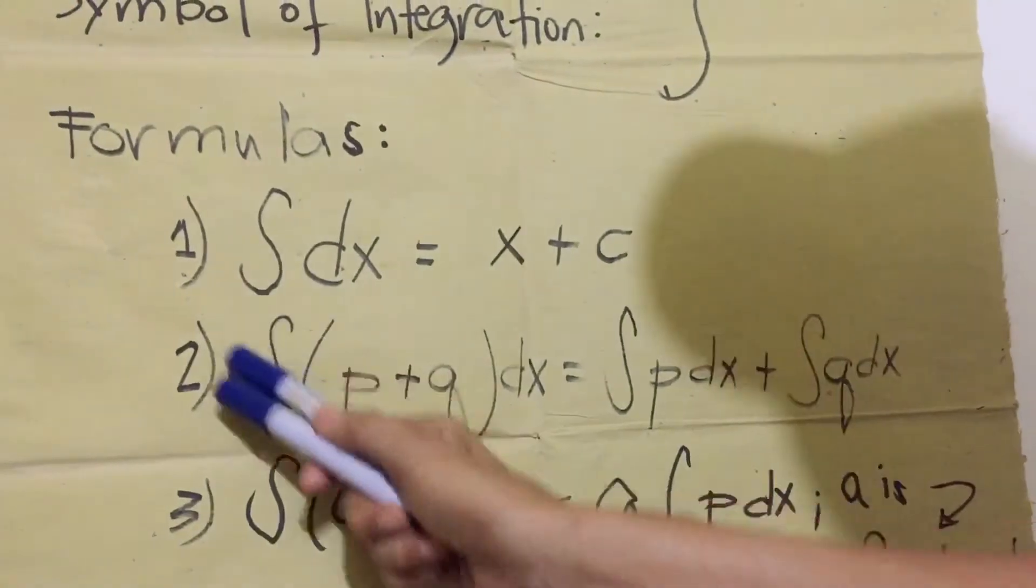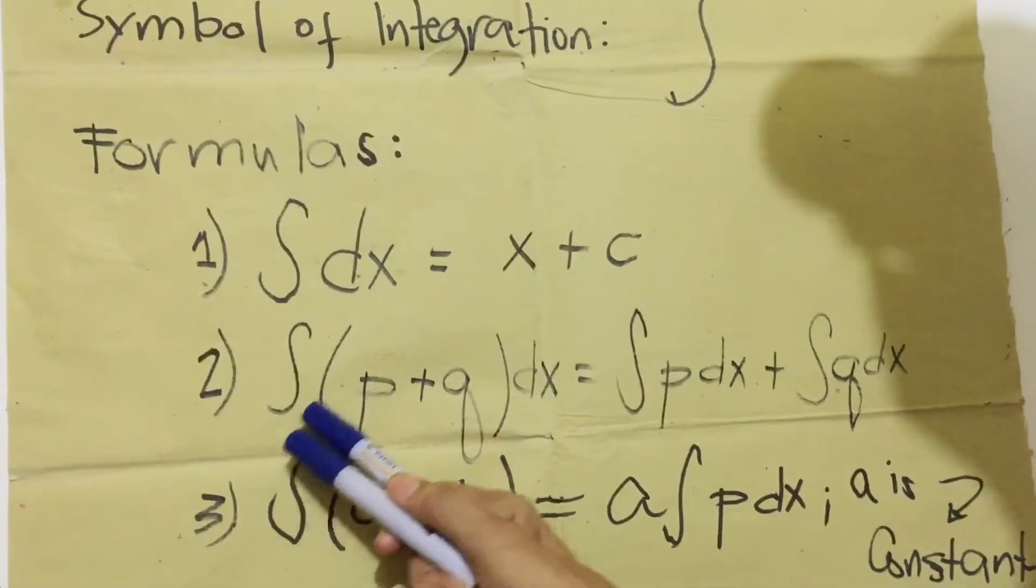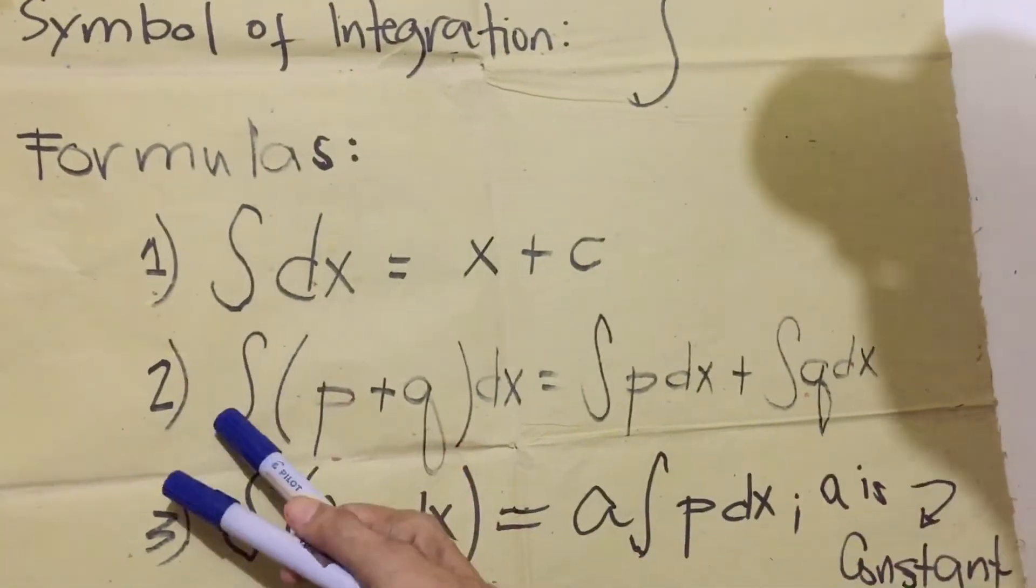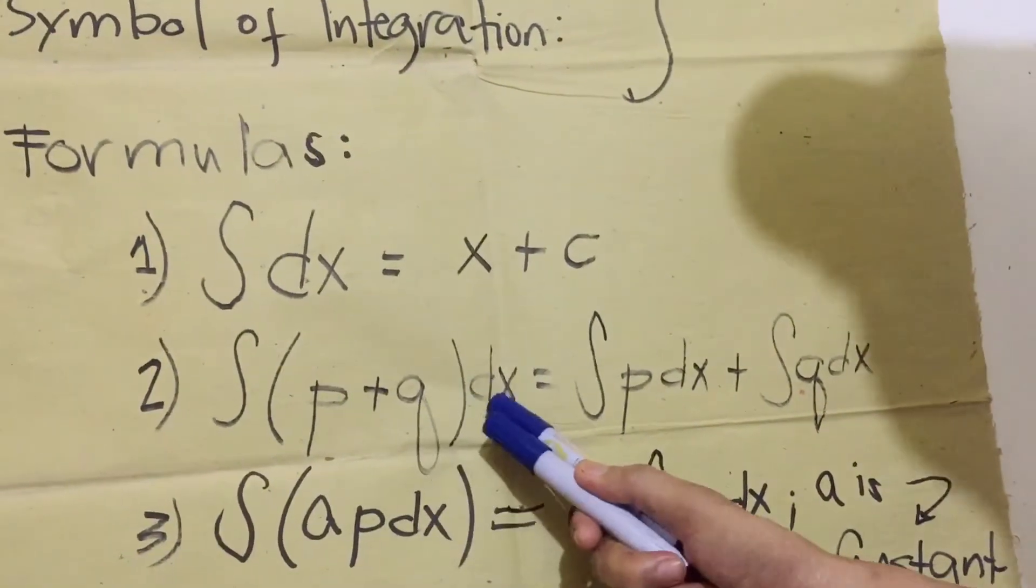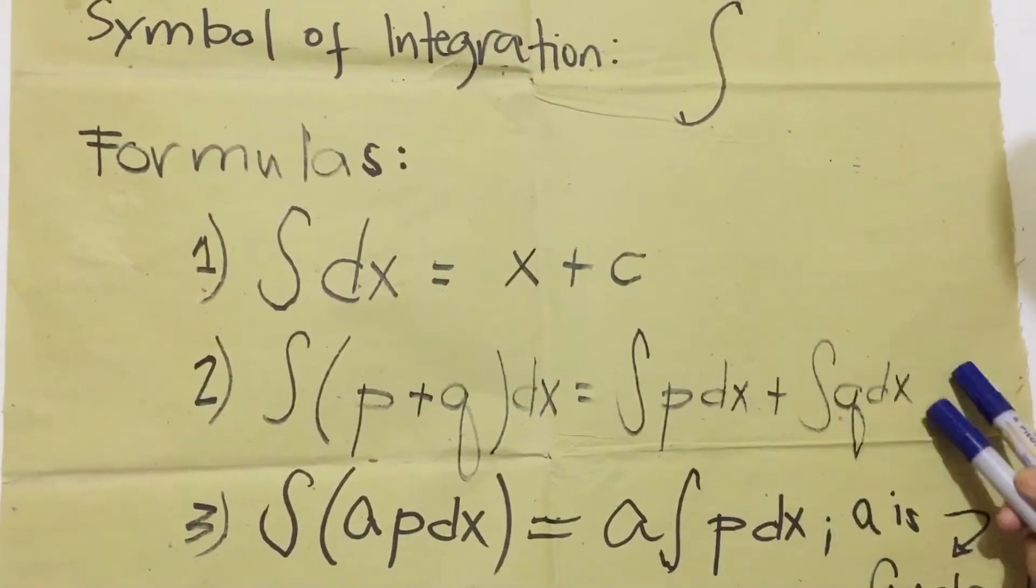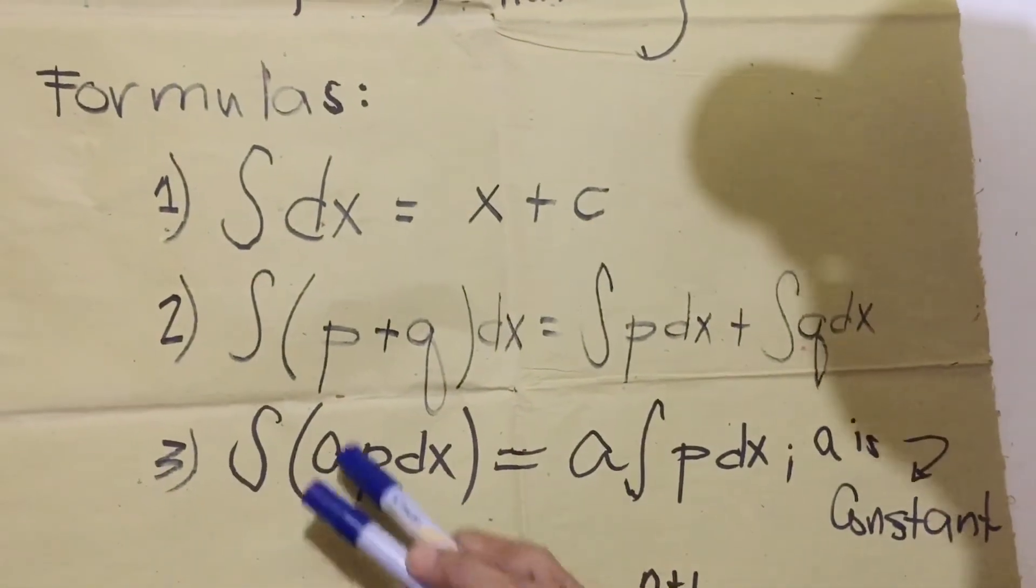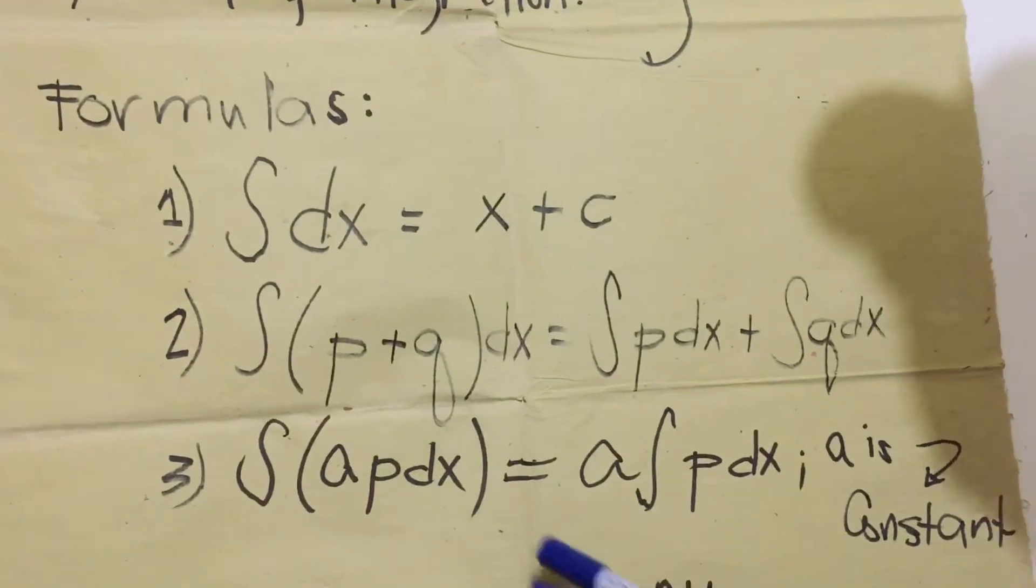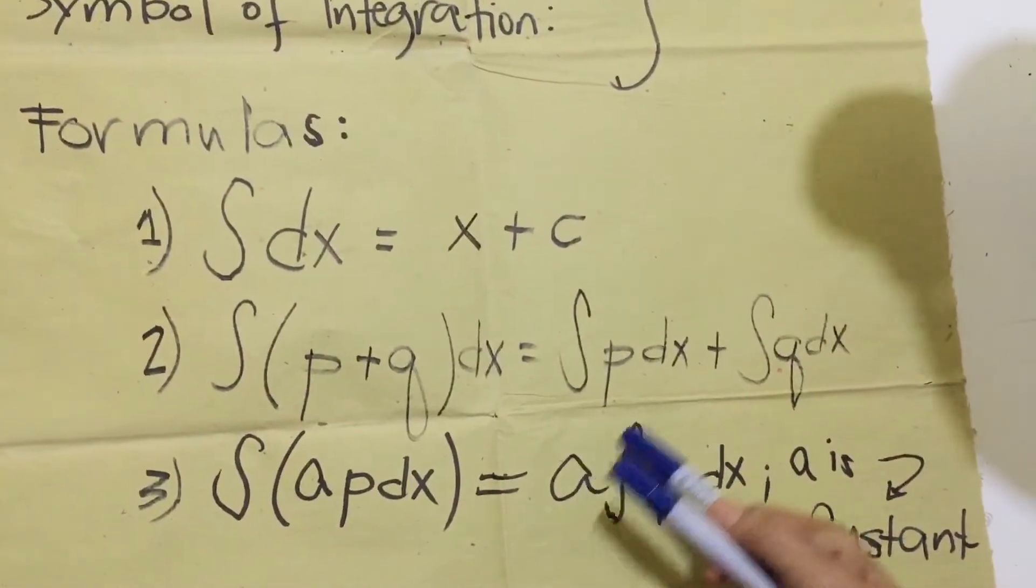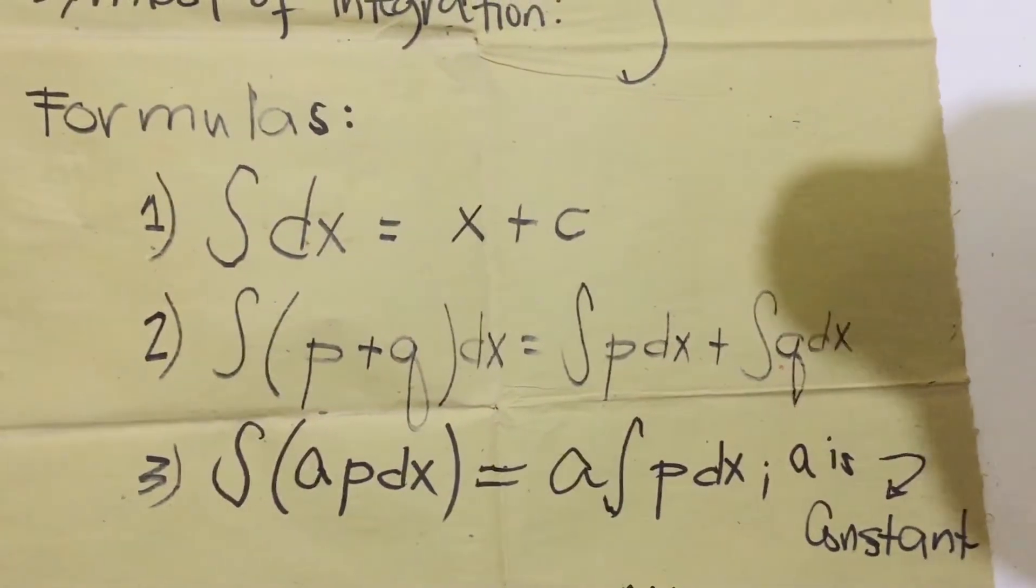Number two formula is the distributive property. Integral of P plus Q dx. We have to multiply integral P times dx equals integral P dx plus integral Q dx. Number three, we have integral of A times P dx equals A, the constant before the integral sign, then P dx.